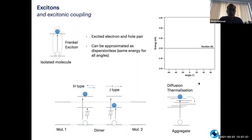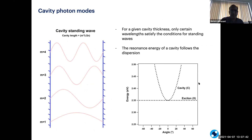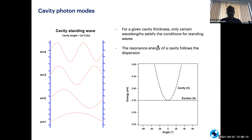What I'm going to discuss today is what would happen if you couple the molecular exciton with a cavity. When we think about cavities, you simply put two mirrors, and between these two mirrors you can support different modes — from half a wavelength to full wavelength and so on. What determines this is basically the length of the cavity. As you go to higher modes, you are supporting smaller wavelengths. For a given cavity thickness, only certain wavelengths will satisfy the boundary conditions, where there have to be nodes, and as a result the cavity follows the dispersion shown here.